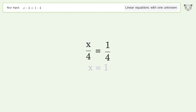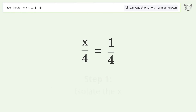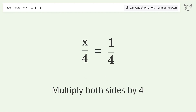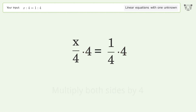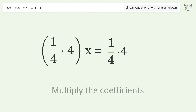Let's solve it step by step: isolate the x, multiply both sides by four, group like terms, multiply the coefficients.